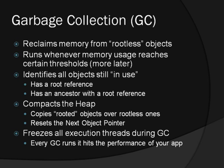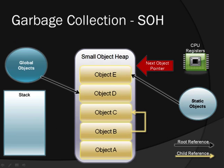Every garbage collection will hit the performance of your application to some extent. When the garbage collector runs, it will create a list of objects that ultimately have a root reference, and then it will copy the rooted objects over the rootless ones. Thus, the heap is compacted, and the memory from the rootless objects is ultimately reclaimed.